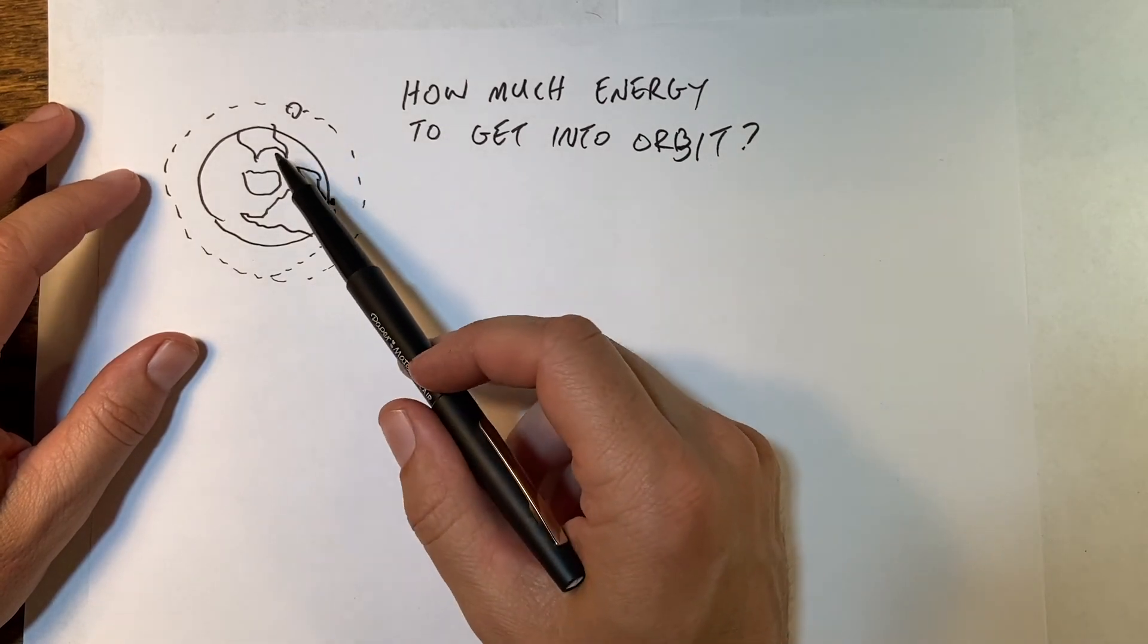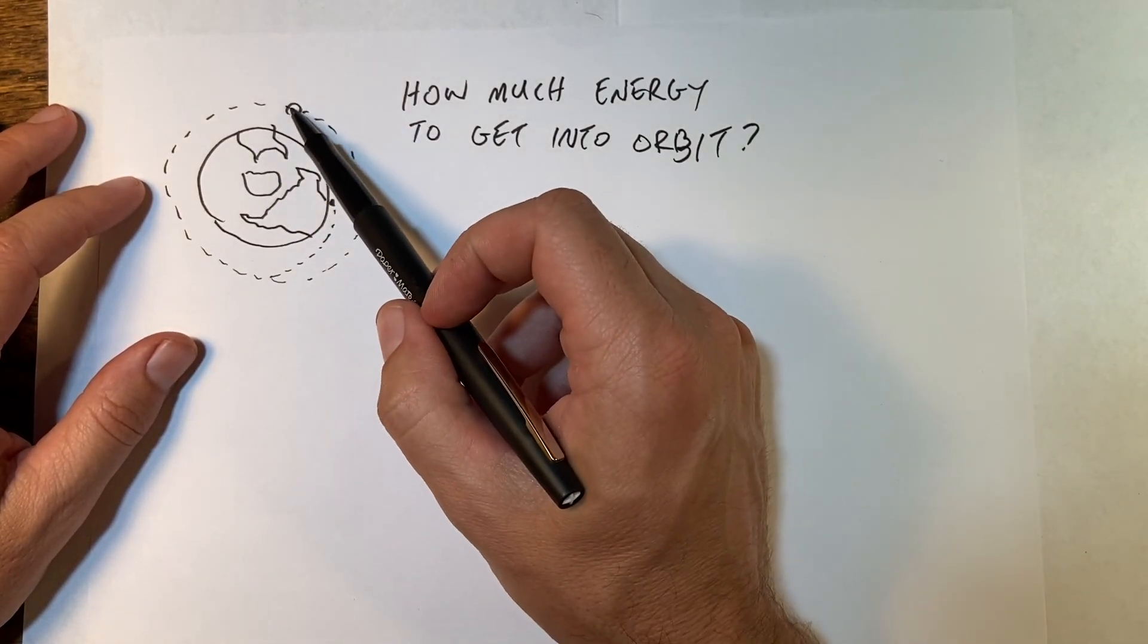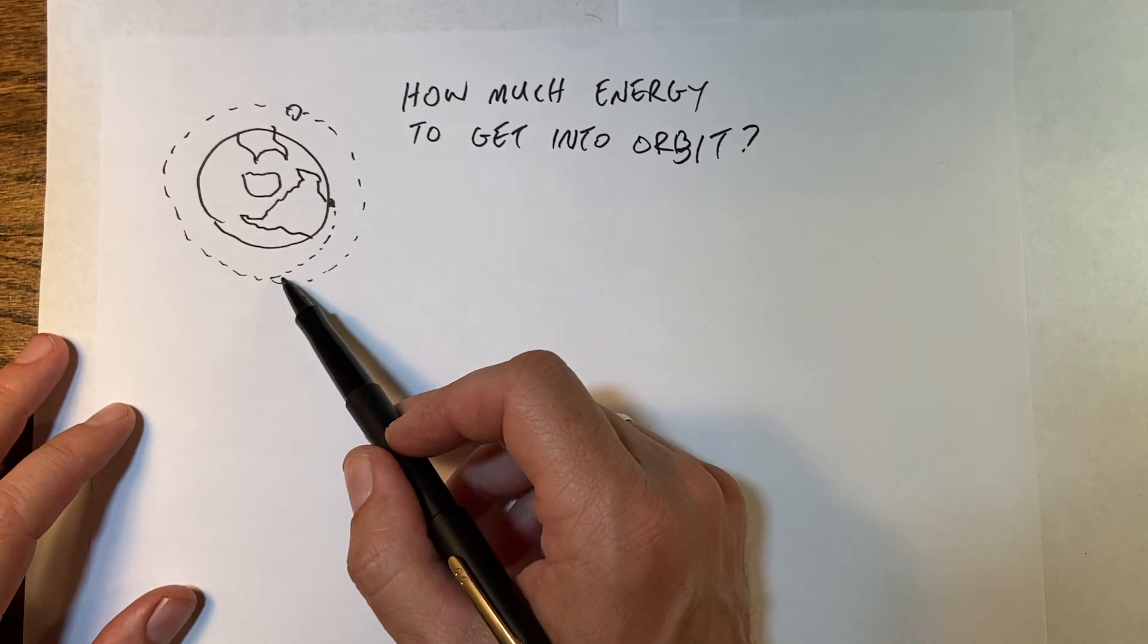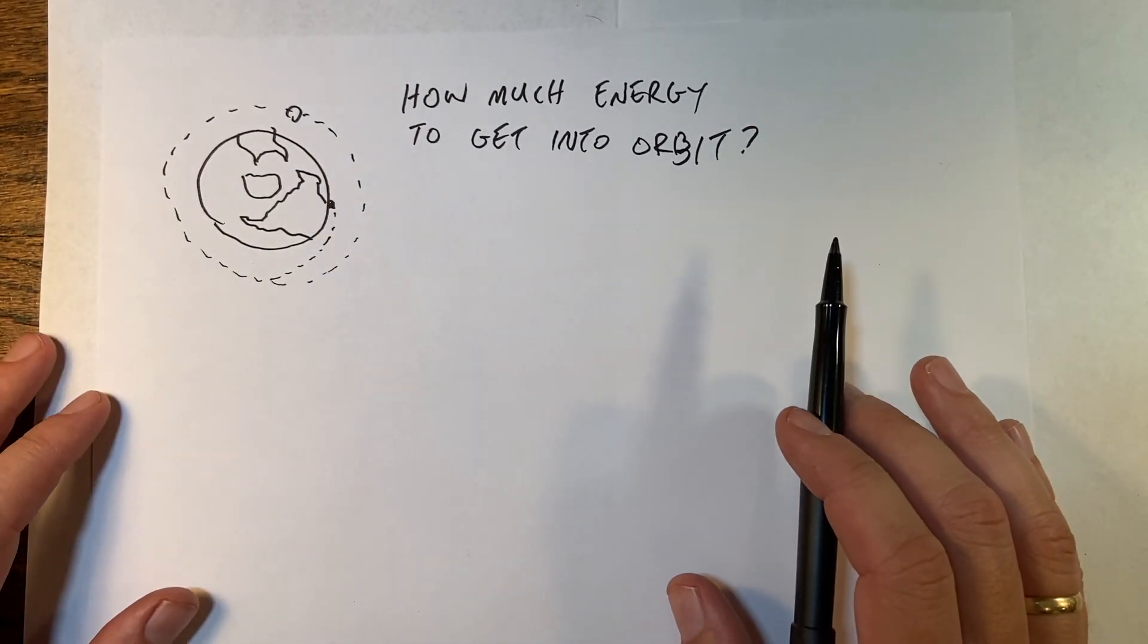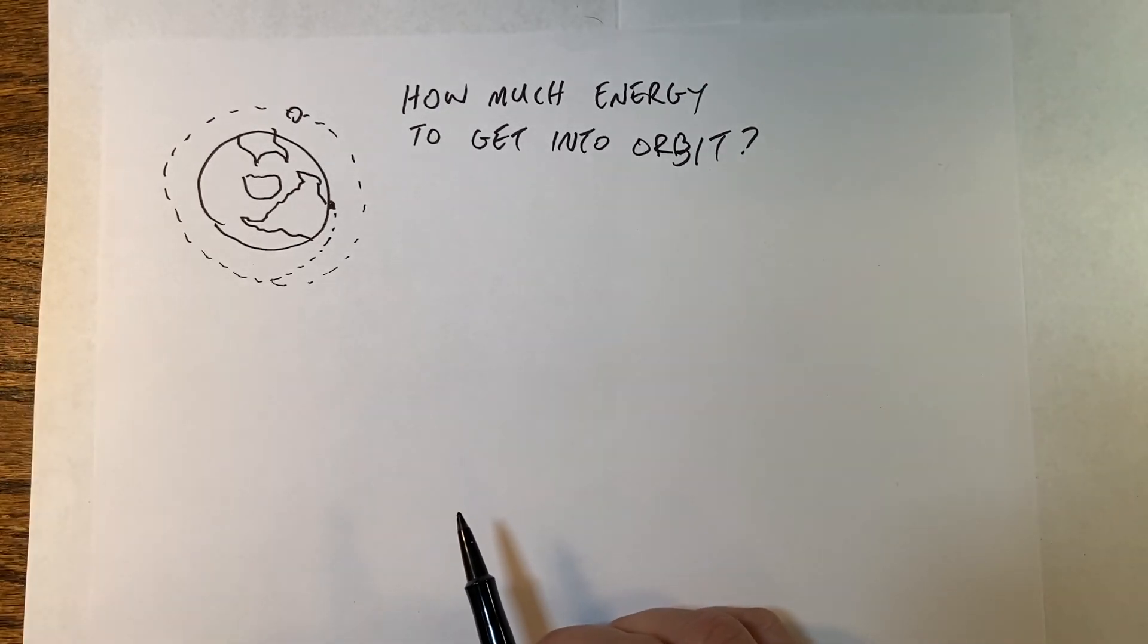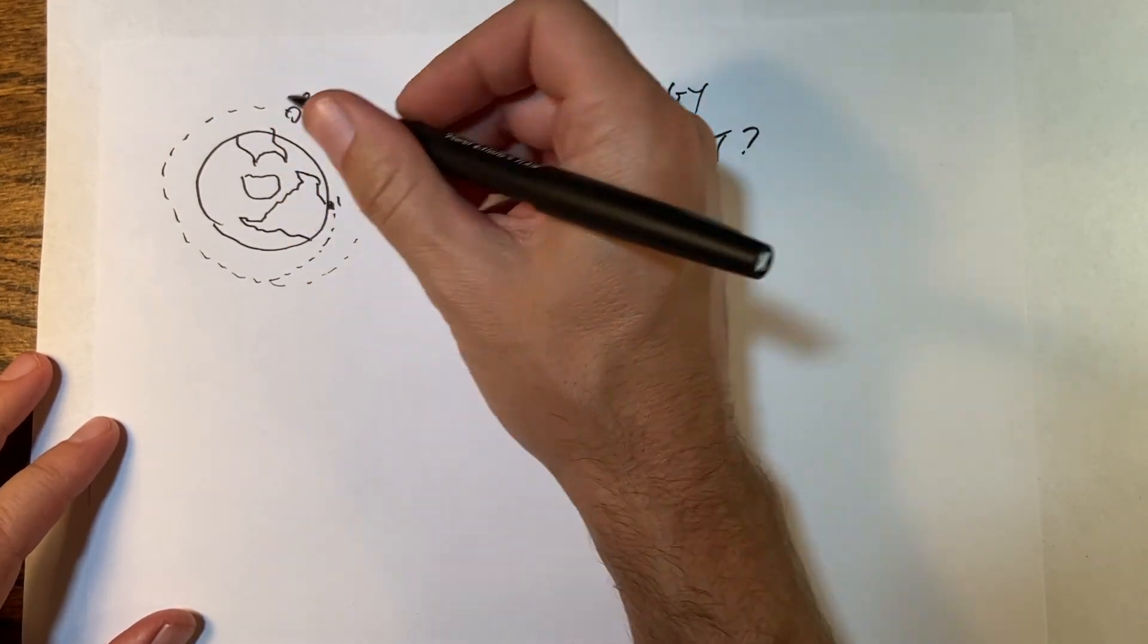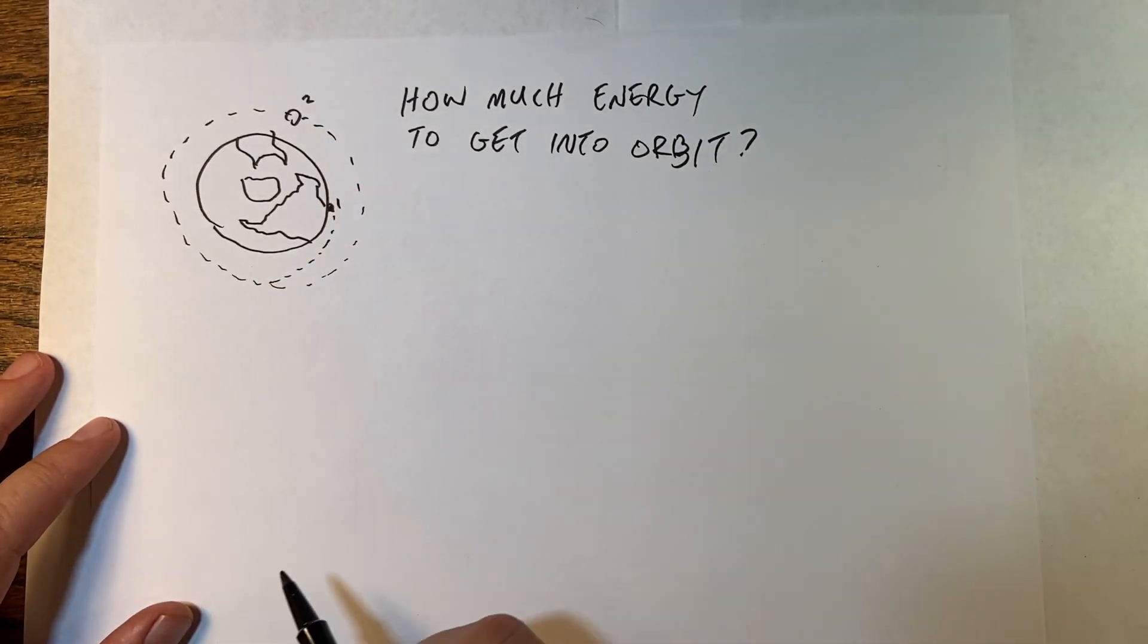Okay, orbital motion. So here I have this is the earth looking at it from the North Pole. I drew this myself and here is a ginormous object orbiting it. But let's say it starts right here on the surface of the earth and you want to launch it into space.